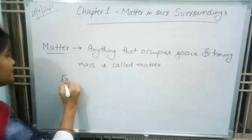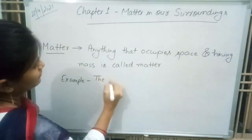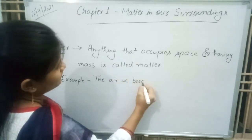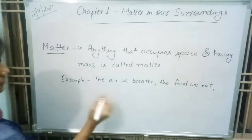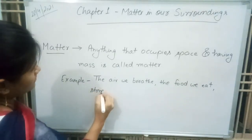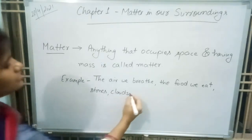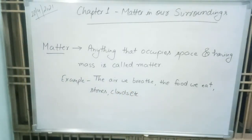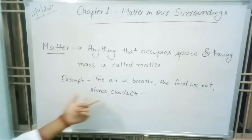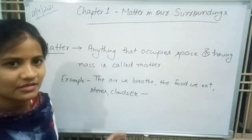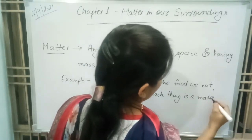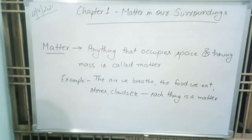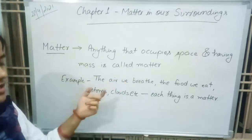Examples of matter: the air we breathe, the food we eat, the stones, clouds, etc. Each thing is a matter. So, any substance that occupies space and has mass is called matter.